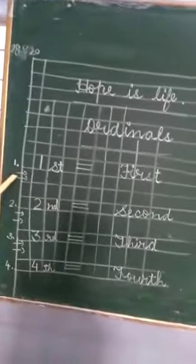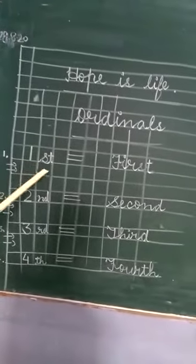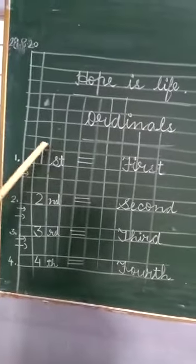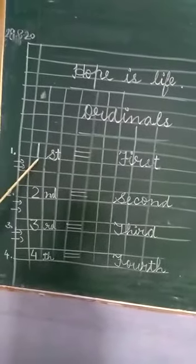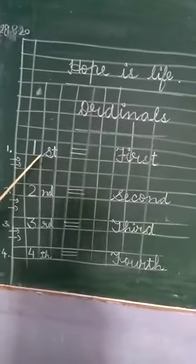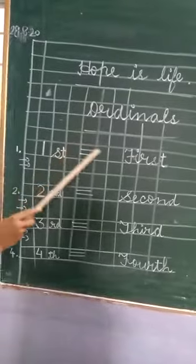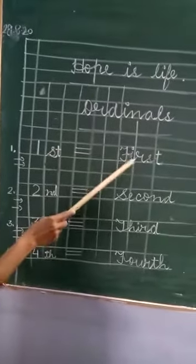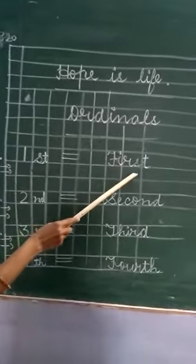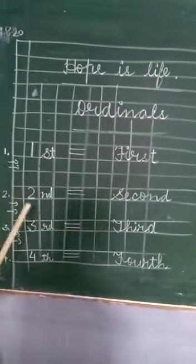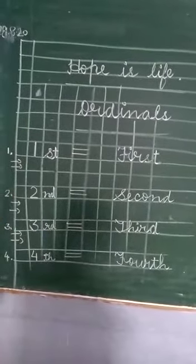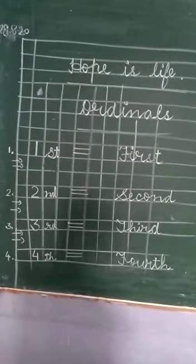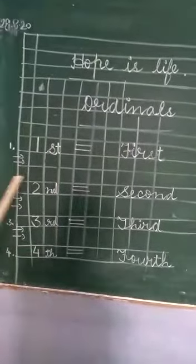Like number 1, first. When we write the numbers in the numeric form, we write 1 and we add st. This is called first. And when we write the spelling of first, this is F-I-R-S-T, first.